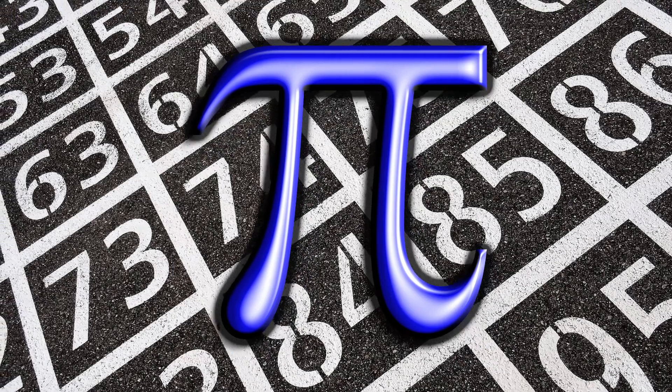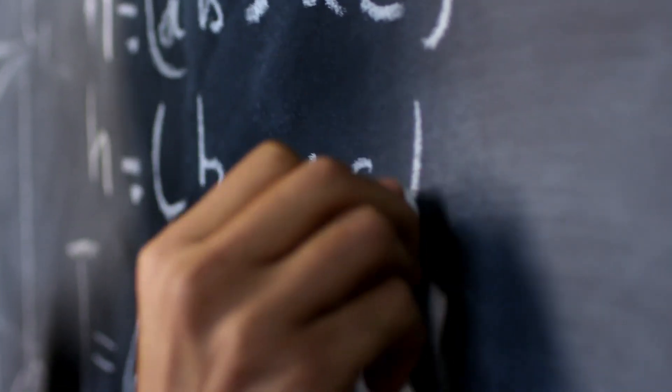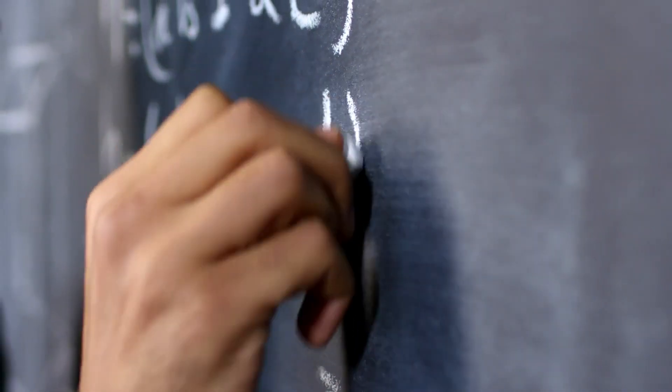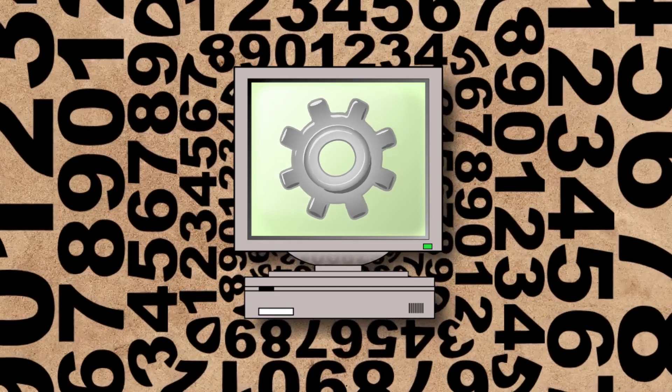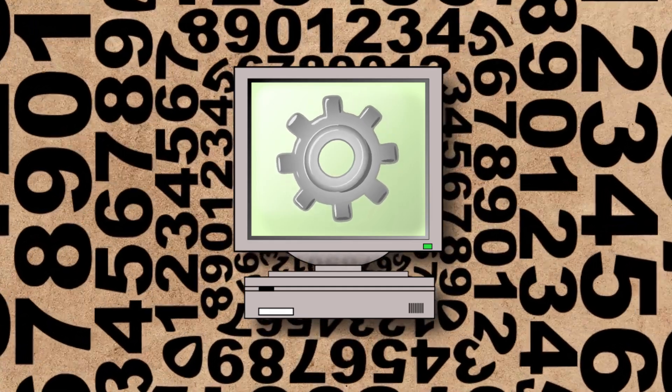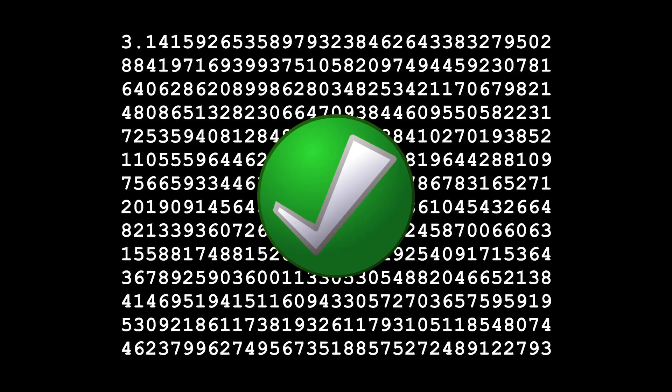Pi is widely believed to be a normal number. While this hasn't been proven mathematically, trillions of digits of pi have been calculated and analyzed and they behave as if they were normal.